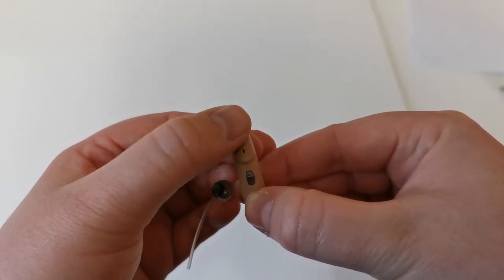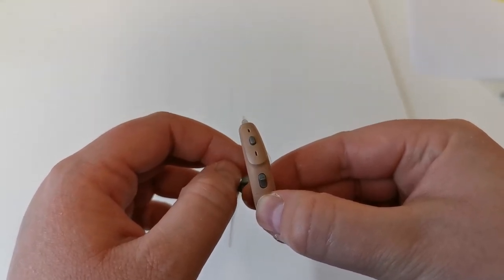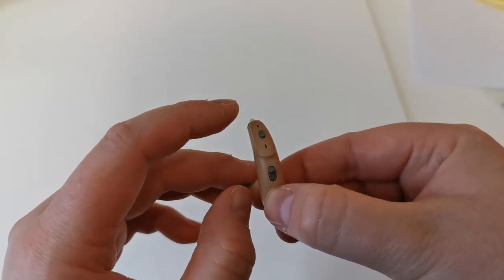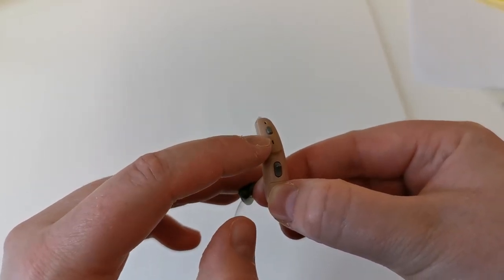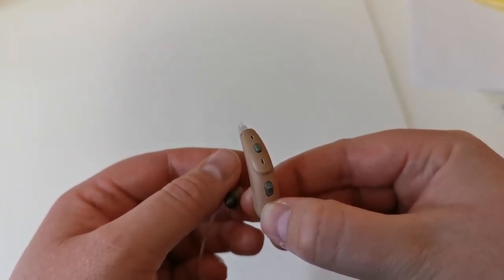There is a program button on the hearing aid. The audiologist will let you know if you have any additional programs on your hearing aids. Next to the program button there are the microphones. It's important to keep this clean, otherwise sound will not be picked up by the hearing aid.